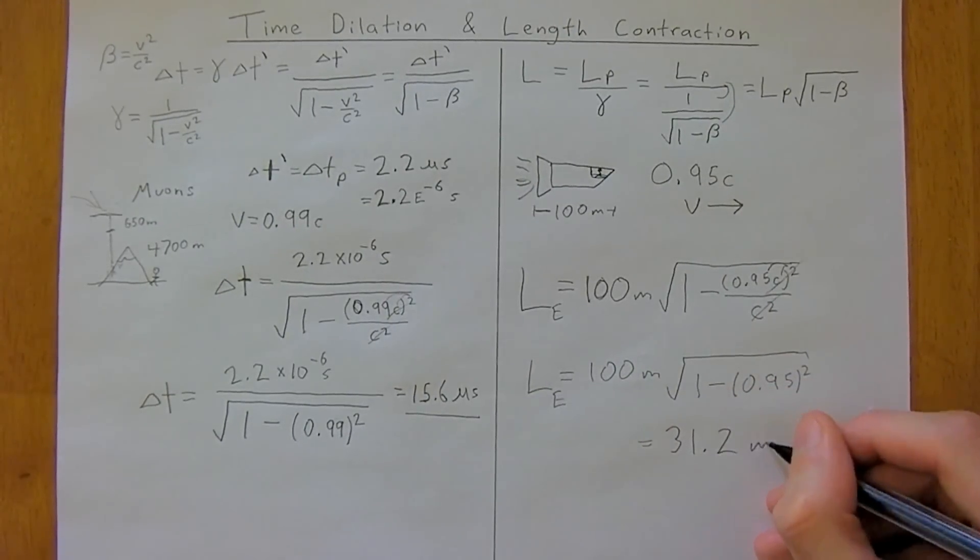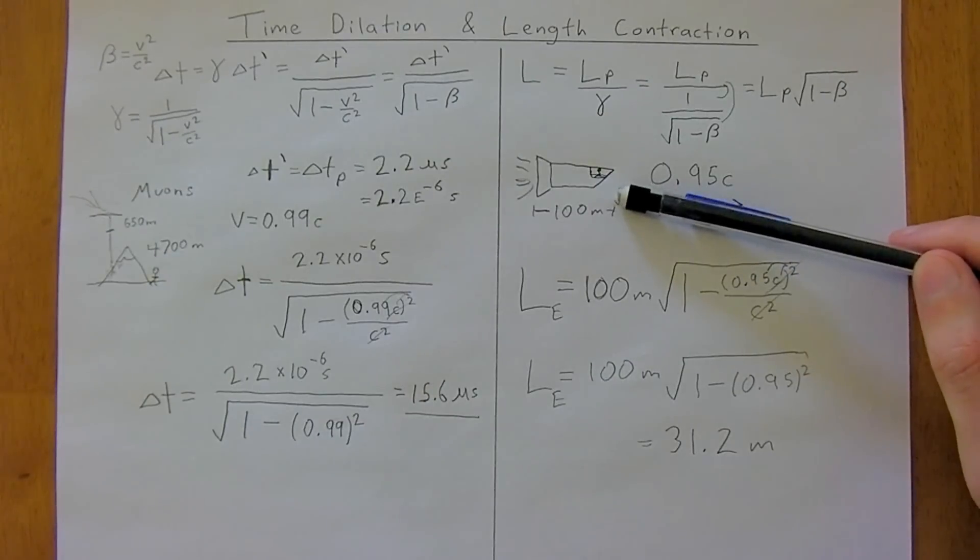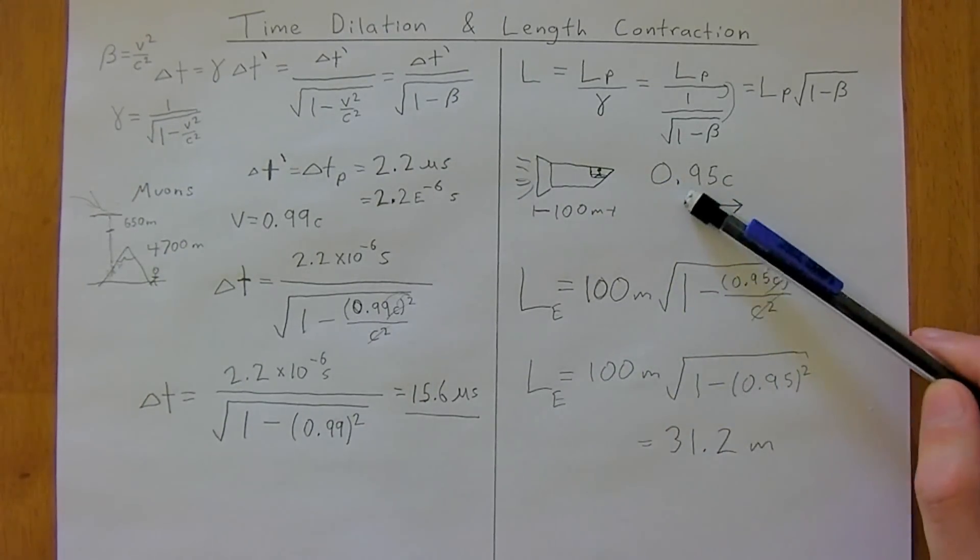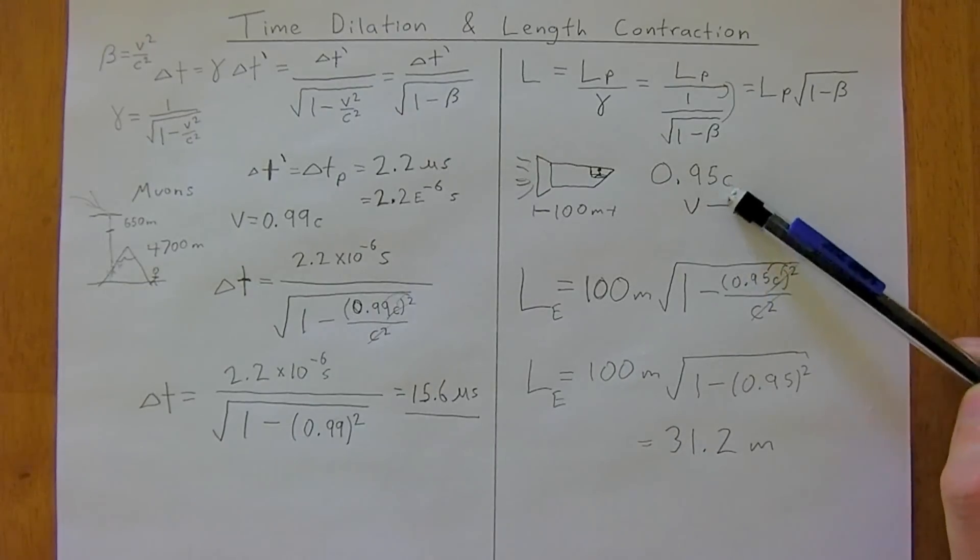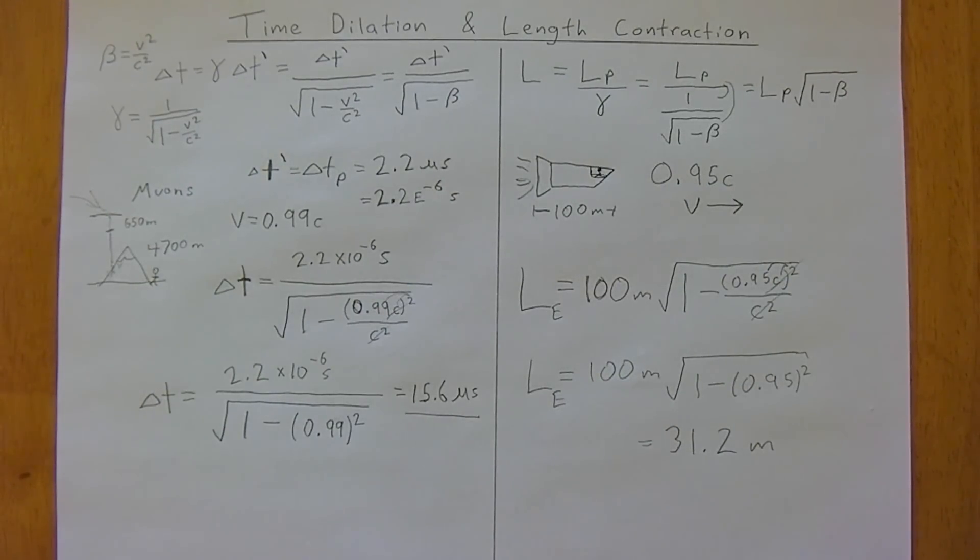which is going to be equal to 31.2 meters. So, that's quite the length contraction. So, in the spaceship, you're going to be 100 meters still, but from Earth viewing you, traveling at 0.95, so 95% of the speed of light, the spaceship is only going to appear to be 31.2 meters long. Okay, see you in the next video.